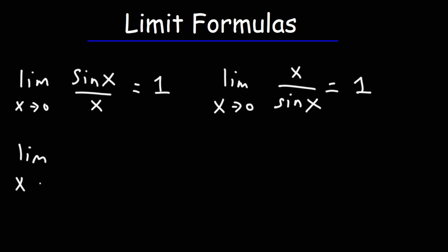Now, the next one is similar to the previous two. The limit as x approaches 0 for tangent x over x is also equal to 1. And for the reciprocal, it will be the same. For x over tangent x, this also equals 1.